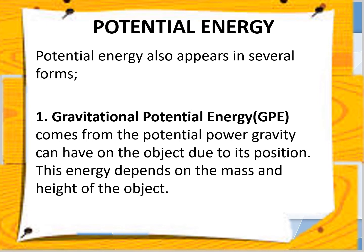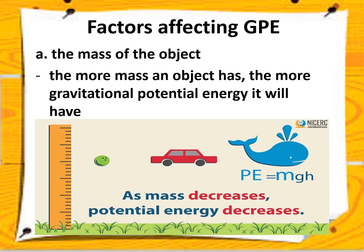Potential energy has several forms. The first one is gravitational potential energy, or GPE. GPE is the potential power gravity can have on the object due to its position — simply gravity. This energy depends on the mass and height of the object. The first factor affecting GPE is the mass of the object. The more mass an object has, the more gravitational potential energy it will have.